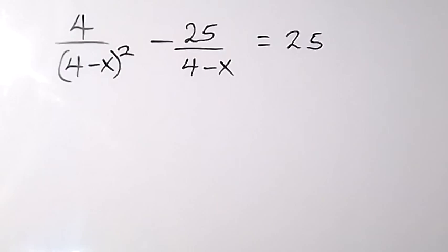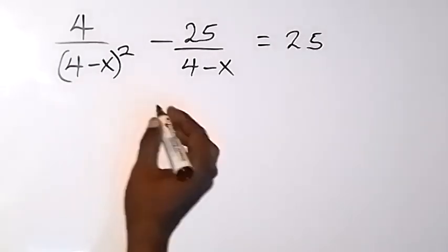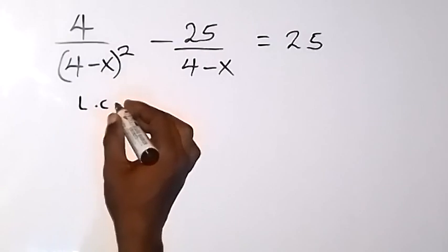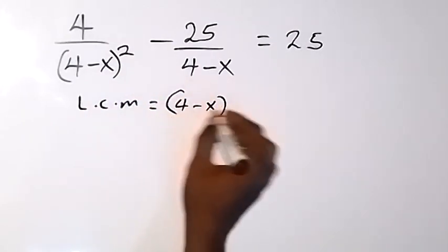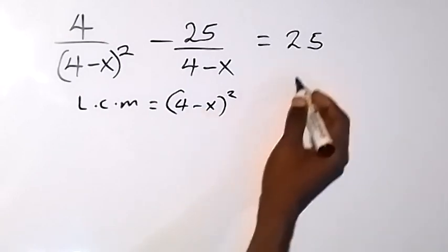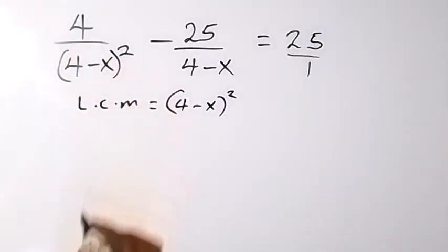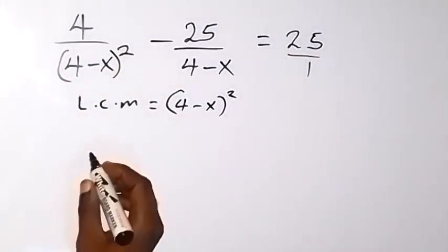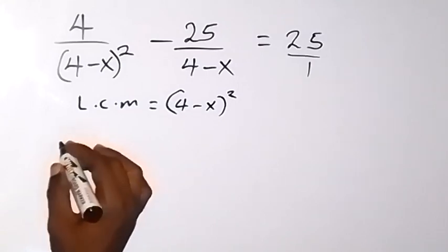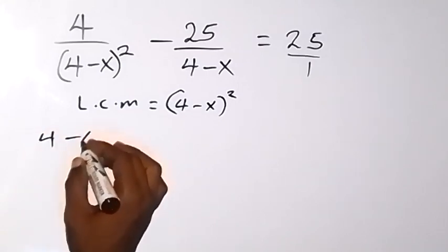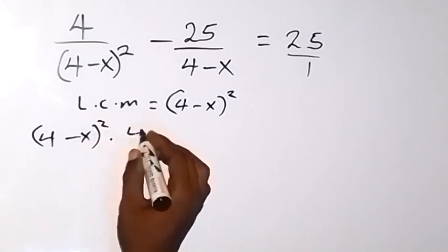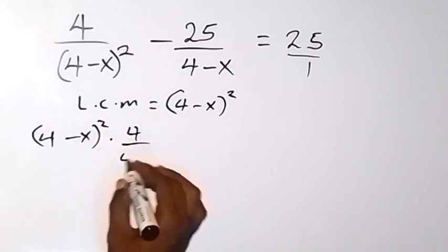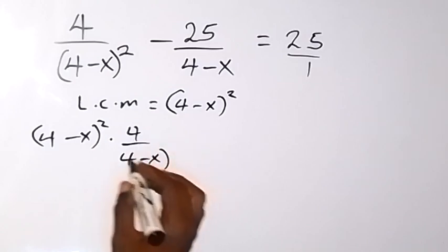Now let's multiply through by the SCM of this. The SCM gives us 4 minus x squared. So when we multiply through the fraction by 8, on this side we have 4 minus x squared, then multiply by 4 over 4 minus x squared.